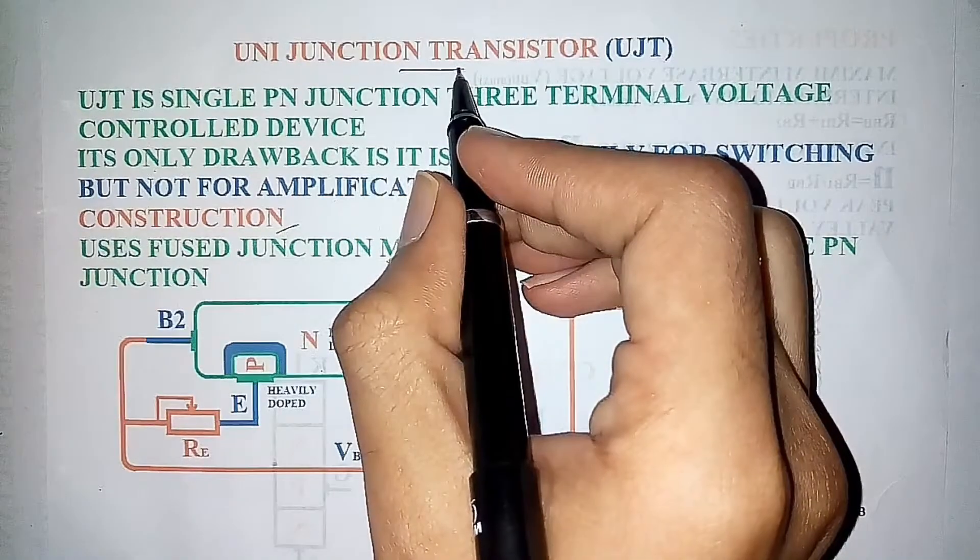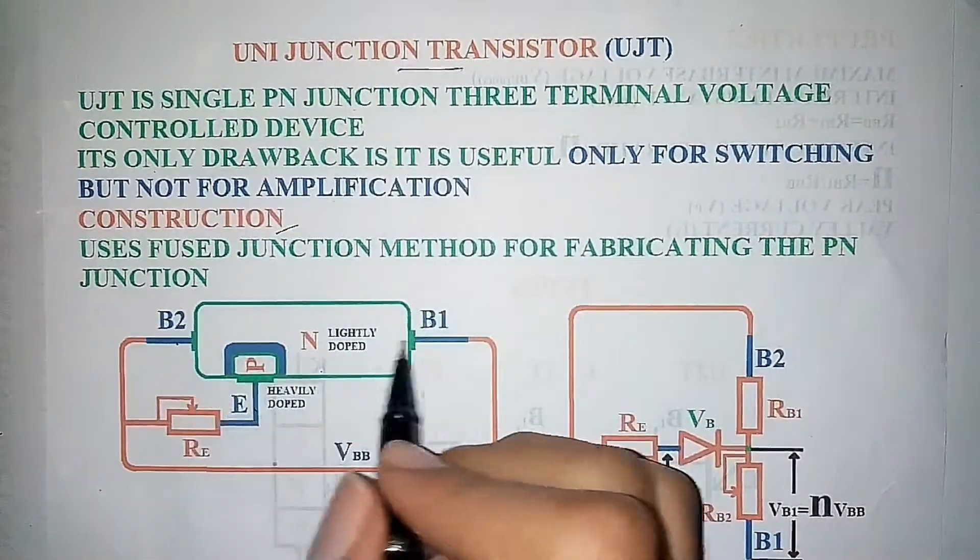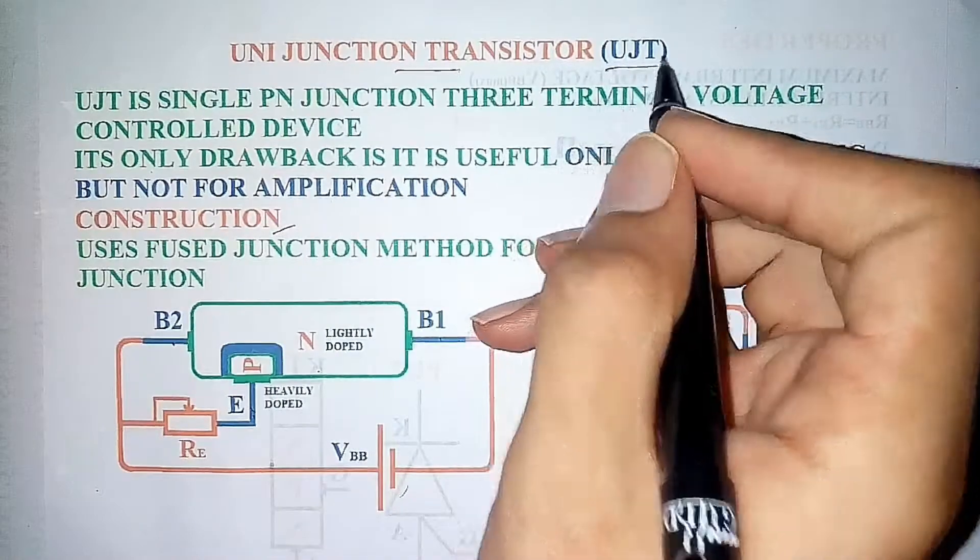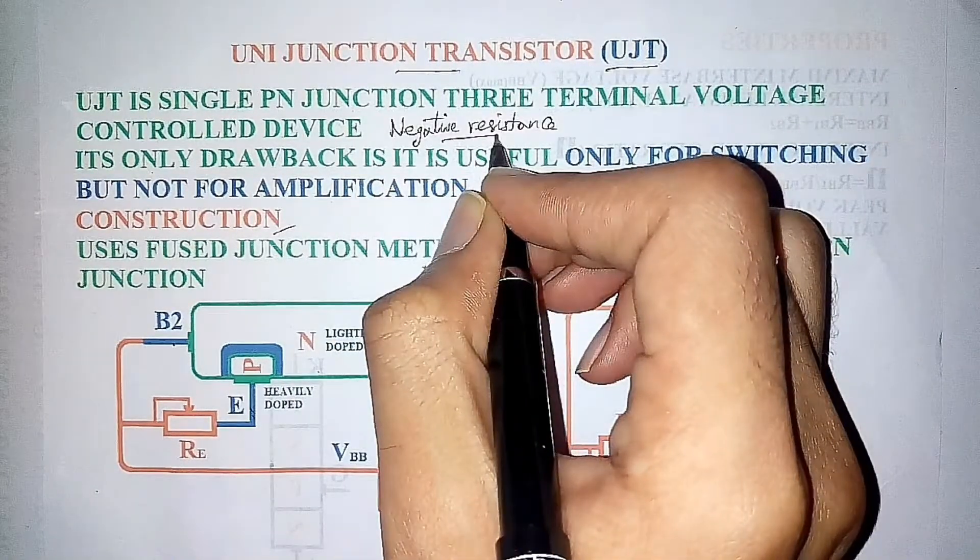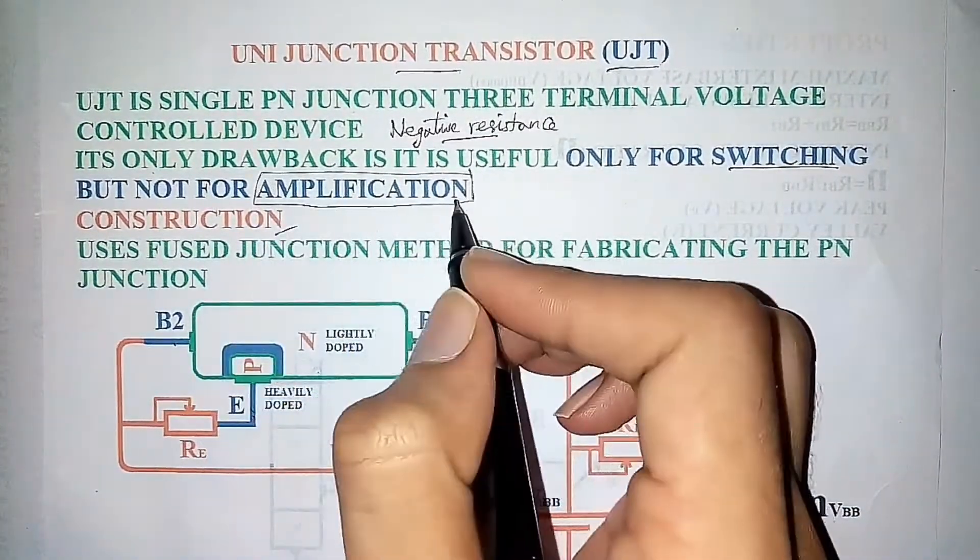Uni Junction Transistor, UJT, is a single-PN junction, three-terminal voltage-controlled device. The special property of UJT is it exhibits negative resistance. Its only drawback is it is useful only for switching but not for amplification of signals.